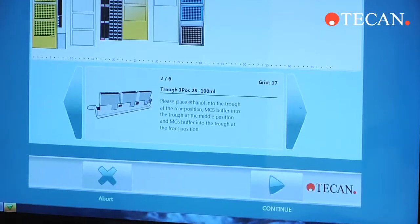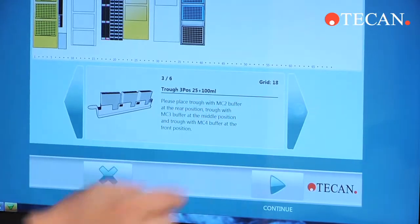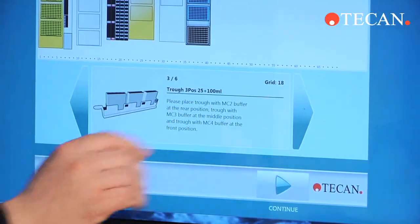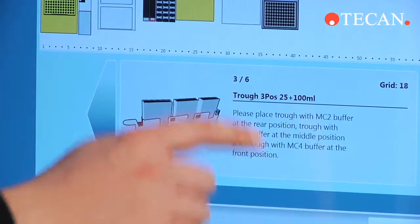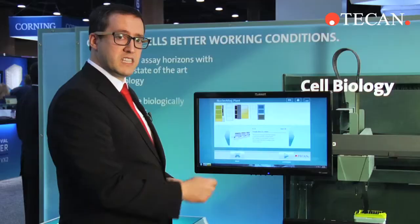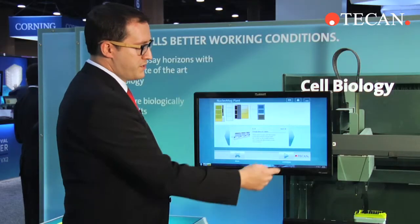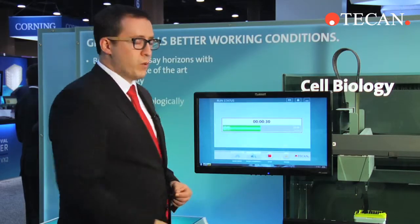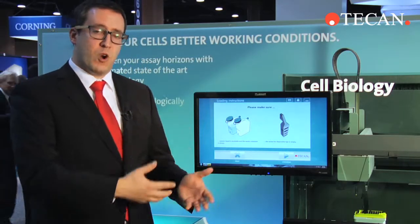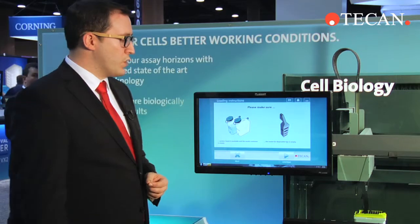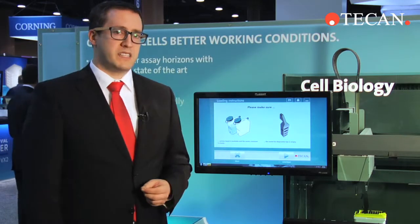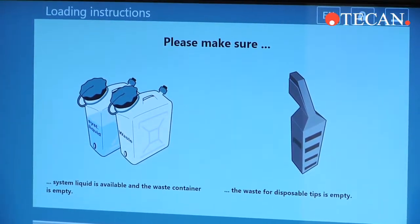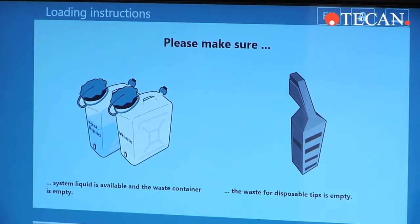Here we have a work table command where the operator can go through everything on the work table that needs to be set up ahead of time with customizable text and customizable pictures. Once the user has made sure that the robot is ready to run work table wise, you can give them some last minute steps like please make sure the waste bottle is ready or the waste chute is empty.